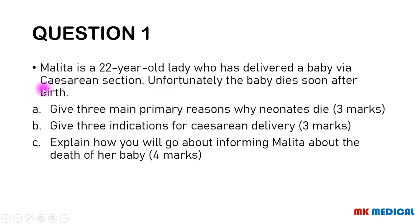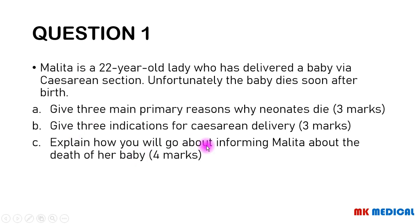Question 1. Malita is a 22-year-old lady who has delivered a baby via caesarean section. Unfortunately, the baby dies soon after birth. Give 3 main primary reasons why neonates die. Give 3 indications for caesarean delivery. Explain how you will go about informing Malita about the death of her baby. You may pause the video right now before I give you the answer.